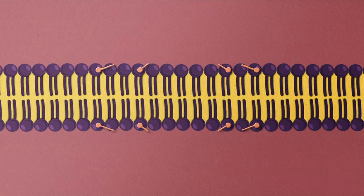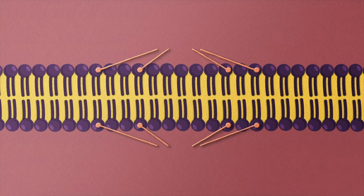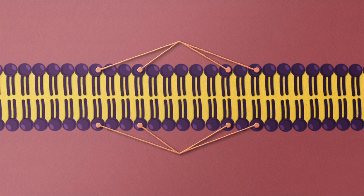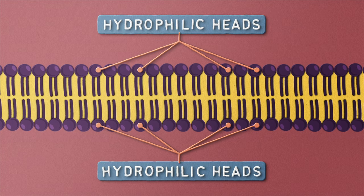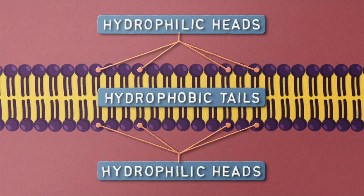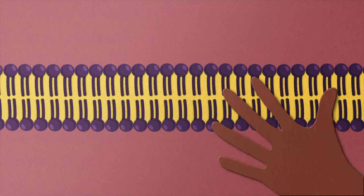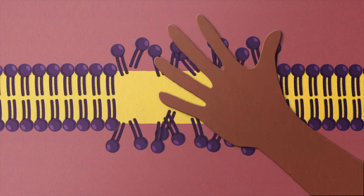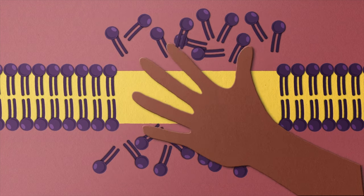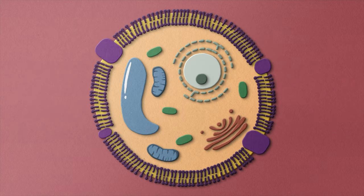This bilayer assembly happens automatically because of the hydrophilic and hydrophobic properties of the phospholipids. This is what we call being amphipathic, and it causes phospholipid self-assembly.